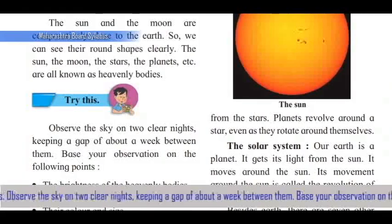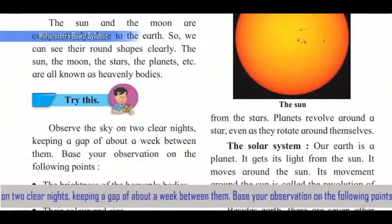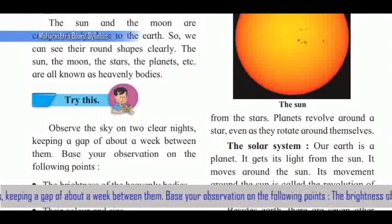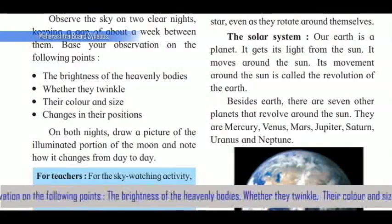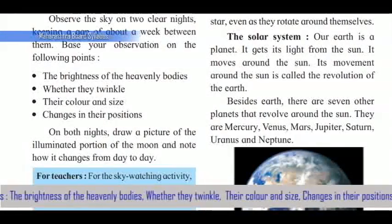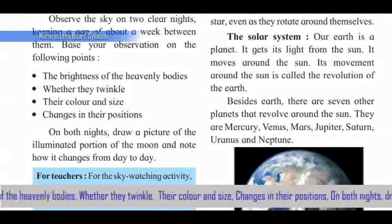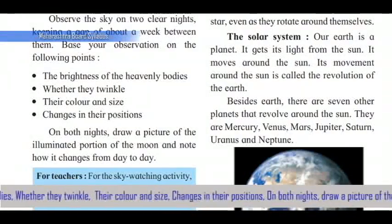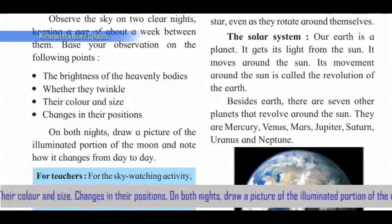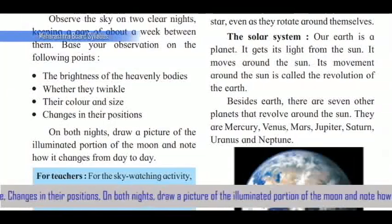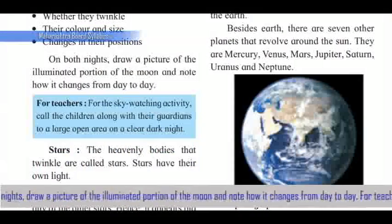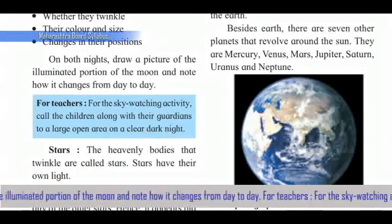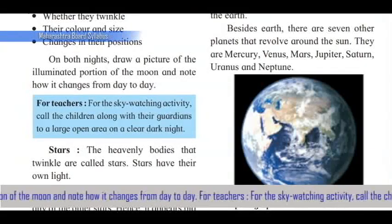Try this activity: observe the sky on two clear nights, keeping a gap of about a week between them. Base your observation on the following points: the brightness of the heavenly bodies, whether they twinkle, their color and size, and changes in their positions on both nights. Draw a picture of the illuminated portion of the Moon and note how it changes from day to day.